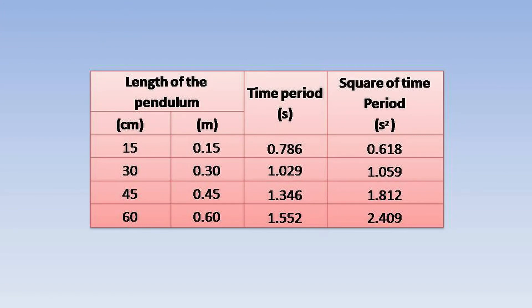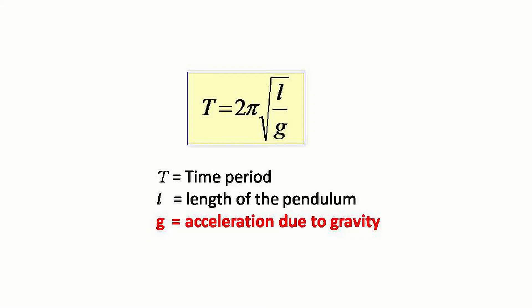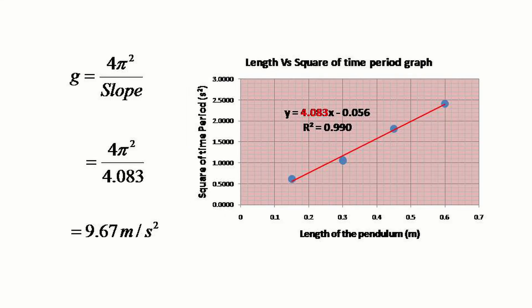Now we will draw a graph with length on the horizontal axis and square of time period on the vertical axis. This gives a straight line confirming a square root relation between length and time period. The exact relation is T = 2π√(l/g), where g is the acceleration due to gravity. We had plotted T² versus l. This linearized equation has 4π²/g as the slope. The value of the slope is 4.083, from which we get the value of g as 9.67 meters per second squared.